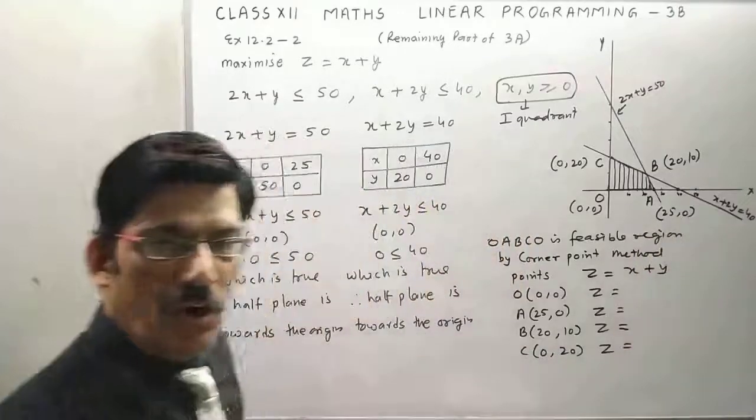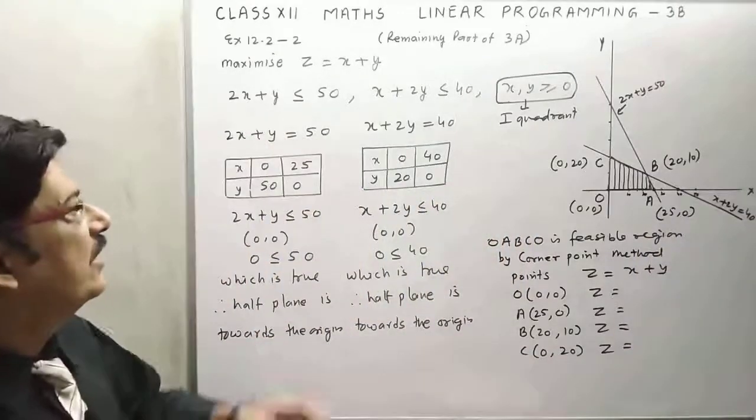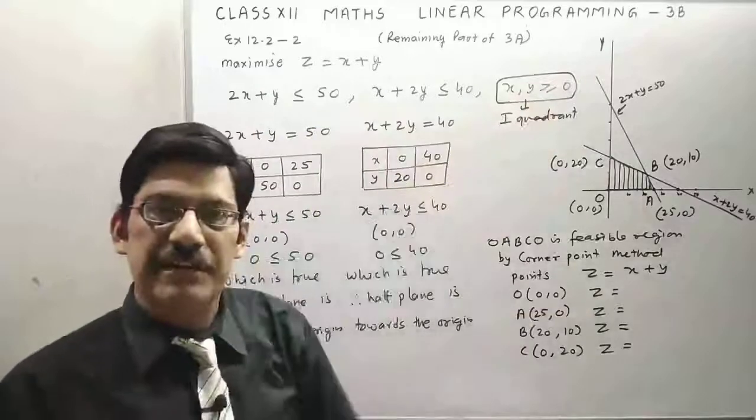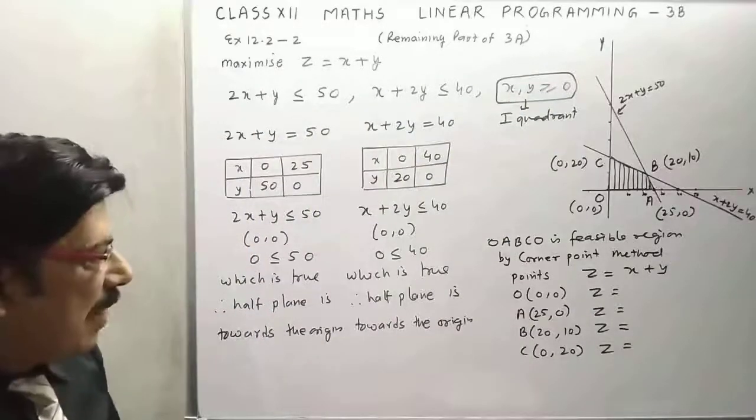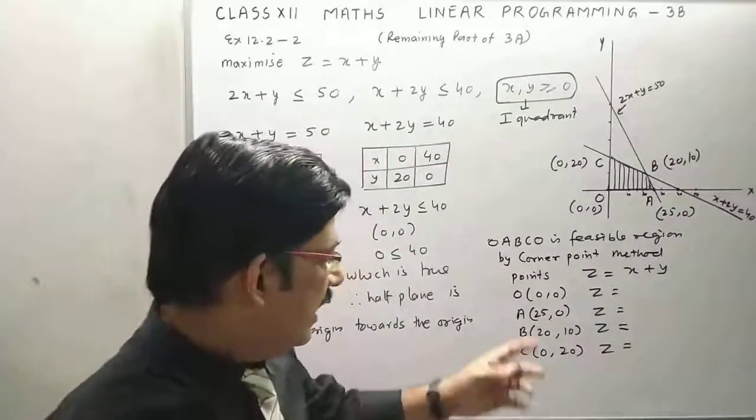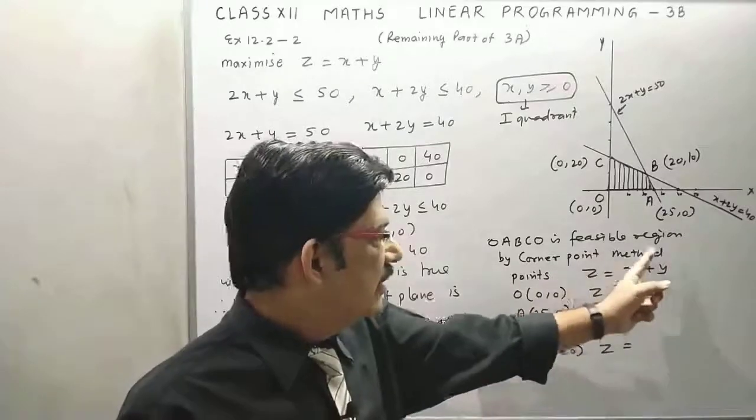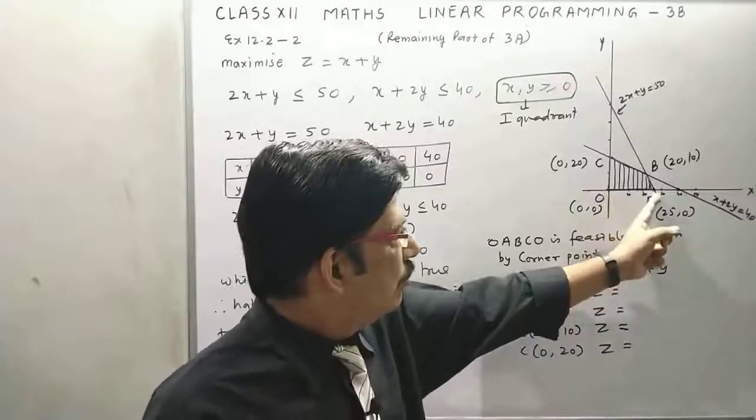Region where all the conditions are satisfied - all the two conditions and this also non-negative intersection. Now we have to calculate Z by corner point method. All the points we have: O, A, B, C.